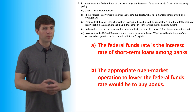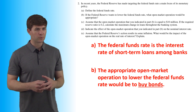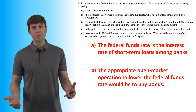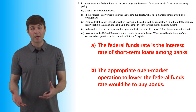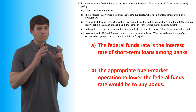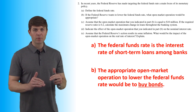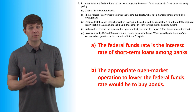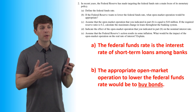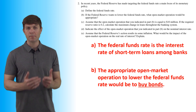For Part B, it says if the Federal Reserve wants to lower the Federal Funds Rate, what open market operation would be appropriate? When it comes to open market operations, it's buying or selling government bonds, T-bills, things like that. To make the cost of borrowing money cheaper, they would want to buy bonds. So the appropriate open market operation to lower the Federal Funds Rate would be to buy bonds.